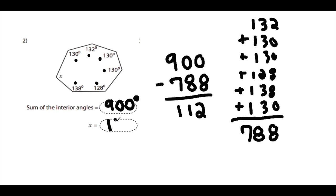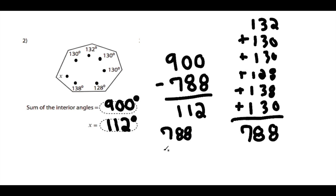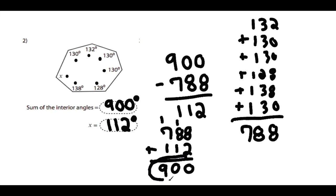So the measure of x, our unknown angle, is once again 112 degrees. Note that both examples resulted in 112 degrees, but this will not always be the case. To double-check, we add the original six angles — 788 degrees — to our found angle of 112: 8 plus 2 is 10, carry the 1; 8 plus 1 is 9, plus 1 is 10, carry the 1; 7 plus 1 is 8, plus 1 is 9 — giving us 900 degrees. This confirms 112 is the correct measure of our missing angle x.